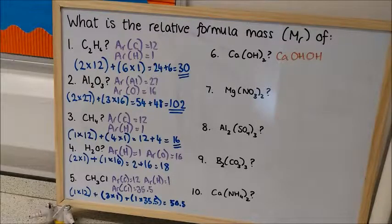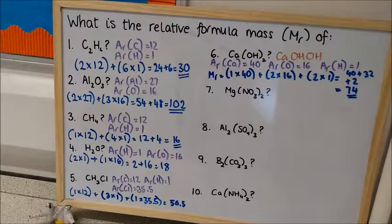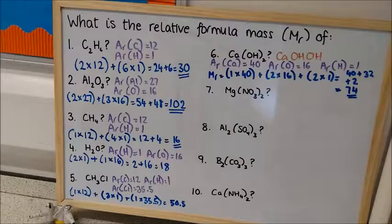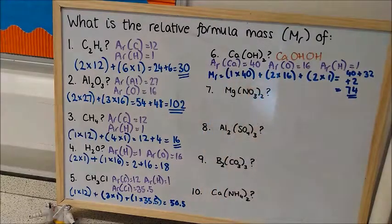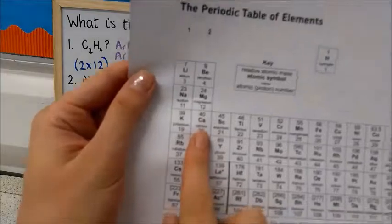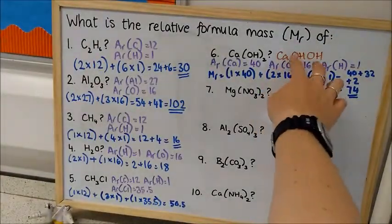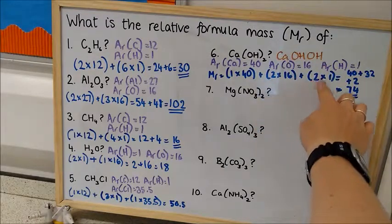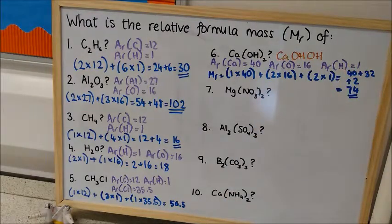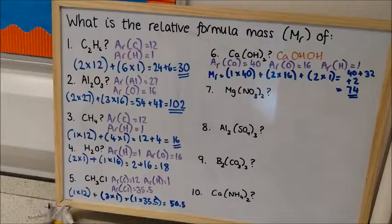So we're going to go through exactly the same process, what are the relative atomic masses, and then multiplying them up. See, I've written it out in full, even though there's only one calcium. One times 40, which is the relative atomic mass of calcium. Two times 16, because I've got two oxygens, and then two times one, because I've got two hydrogens, which gives me an overall mass of 74.